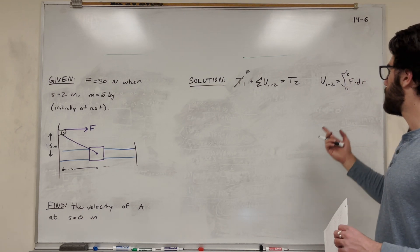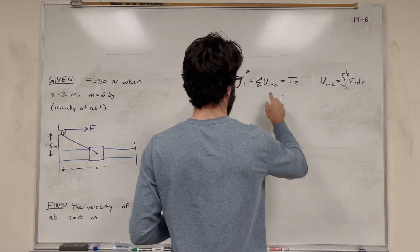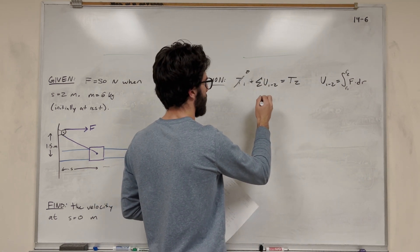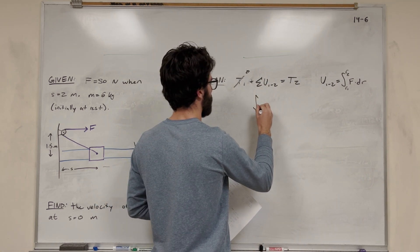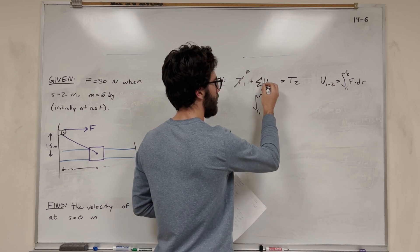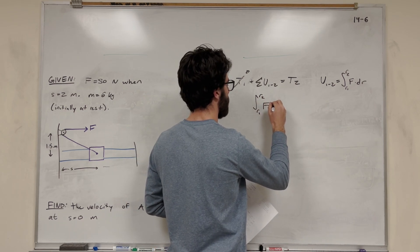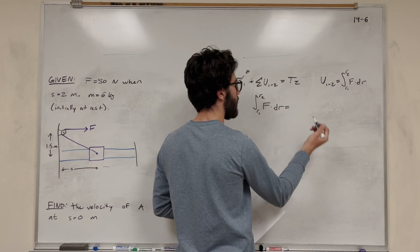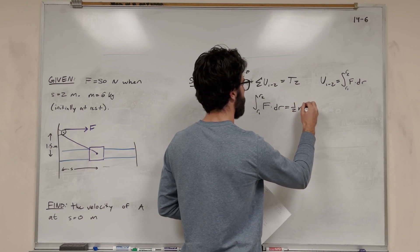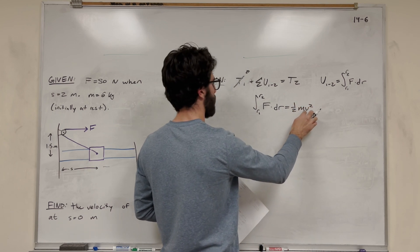So first of all, let's figure out what this equation is going to look like. We're going to find out the numbers. We get the integral from radius 1 to radius 2 of F dot dr is equal to kinetic energy, one half mass velocity squared, and we're solving for velocity.